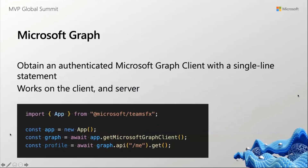Microsoft Graph is also integrated in a similar fashion — with a single line of code, you can generate an authenticated Graph client. You'll notice we don't have to pass in any client IDs, tokens, or scopes. You can modify the scopes if you want to override those arguments, but none of the standard configuration is required because we've handled calling AAD for you, and the configuration is already built into the template.